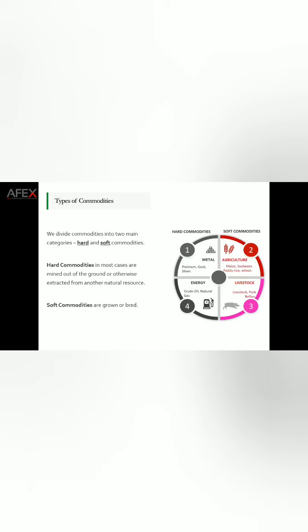Commodities are classified into two broad categories: hard commodities and soft commodities. Hard commodities are the ones mined out of the ground or extracted from natural resources — so metals and energy fall under hard commodities. Soft commodities are the ones that are grown or bred — all agricultural commodities fall under soft commodities, and livestock commodities also fall under soft commodities. Those are the two broad categorizations of whatever type of commodity is traded across markets in the world.